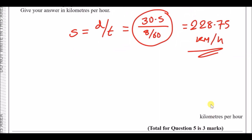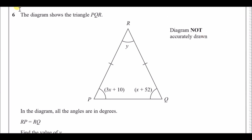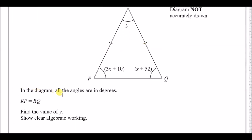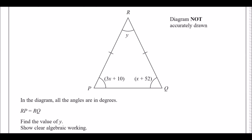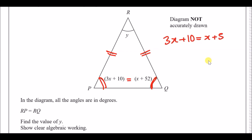Number six: the diagram shows triangle PQR with all angles in degrees. It tells us that the length RP equals RQ, which means this is an isosceles triangle — equal lengths and equal base angles. So the expressions for those two angles are equal: 3x + 10 = x + 52. The question asks to find y, but we need to find x first.